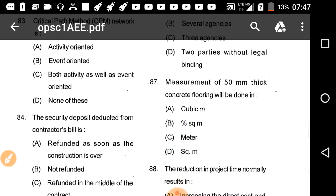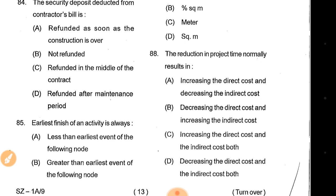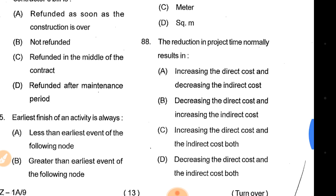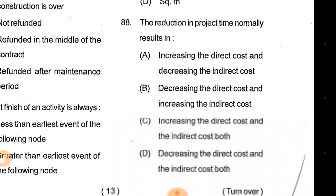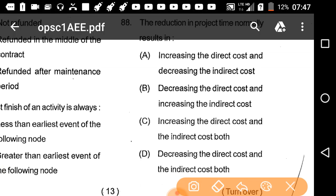Question 88: The reduction in a project duration normally results in increasing the direct cost and decreasing the indirect cost. Option A is the correct answer.